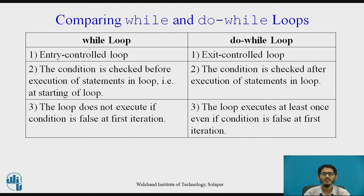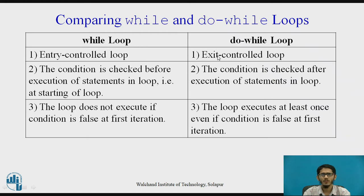Let us see a comparison between the While Loop and the Do While Loop. First, the While Loop is an entry controlled loop, whereas the Do While Loop is an exit controlled loop. Entry controlled means the entry of program execution into the loop is controlled at the entry point. In the Do While Loop, whether the program exits the loop is controlled at the exit point — hence the name exit controlled loop.